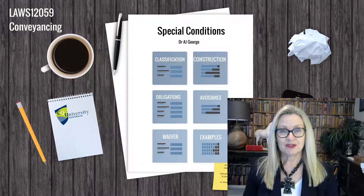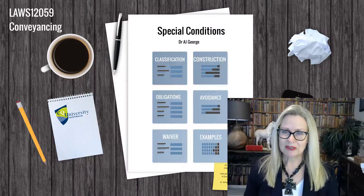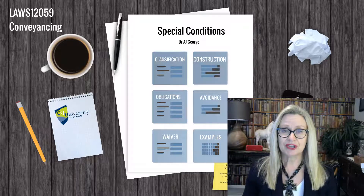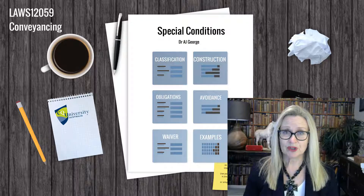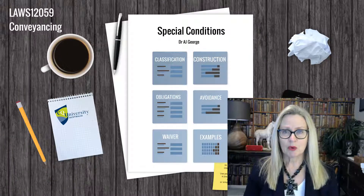Welcome back to Conveyancing. This is the video series on special conditions, and in this unit we have been focusing particularly on the standard terms and conditions found in the REIQ standard form contracts, particularly the houses and land contract. Often, even though you will be dealing with standard form contracts, there will be one or more clauses that the buyer and seller wish to negotiate bespoke — that is, not part of the standard terms and conditions — to deal with specific arrangements they need to make in relation to the transaction.